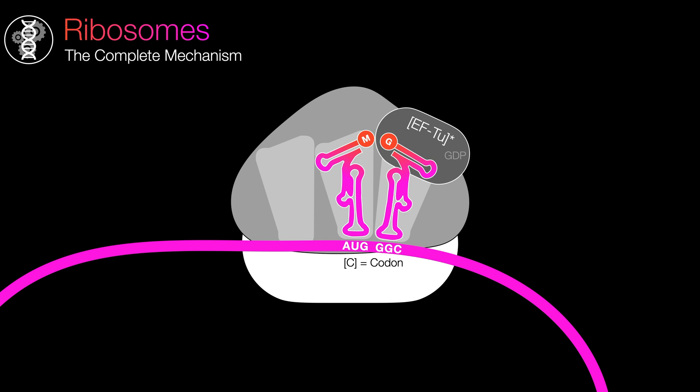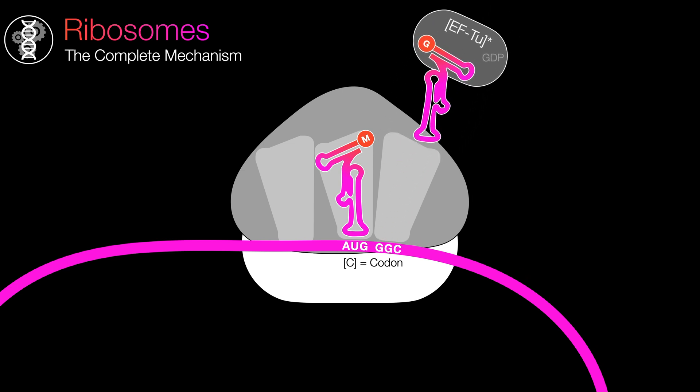This step also has another important consequence. Once the EFTU is in the GDP form, it cannot bind back to the ribosome if it decides to leave. And by simply adding this step, the error rate dramatically drops to 0.01%. This type of mechanism is known as kinetic proofreading. So why does this mechanism fix the errors? Why does spending energy have anything to do with correcting errors? Take a minute to think about it. Be sure to leave your guesses in the comments.